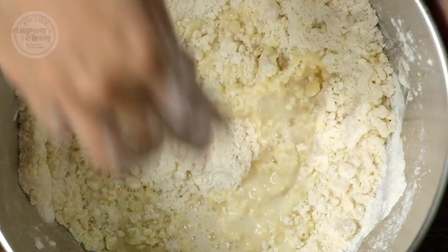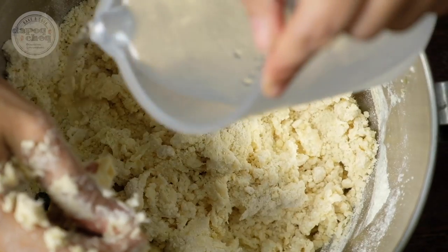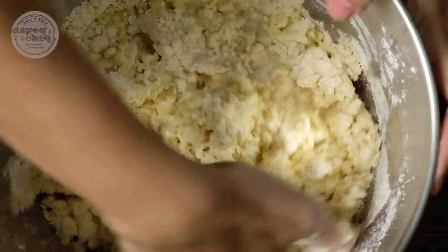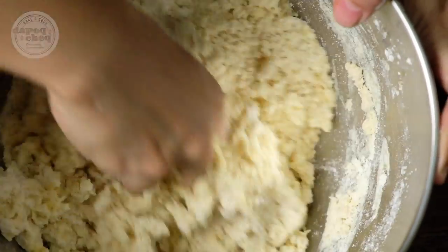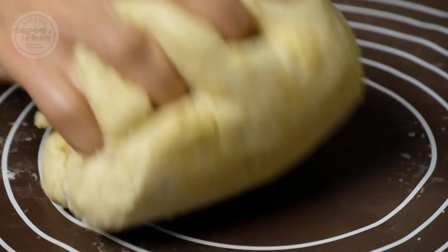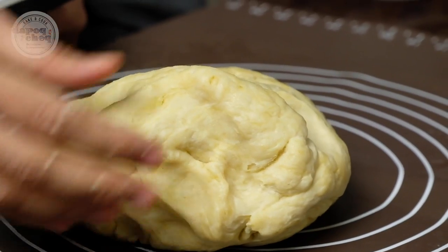Masuk sikit-sikit jangan masuk banyak sekali, sebab kita tak nak dough kita lembek. Kak T letak air sikit-sikit. Masuk air, lepas tu uli. Yang ni kalau nak uli pakai mixer pun boleh, yang stand mixer kan. Yang ni dough yang dah lembut ni, dia dah tak lekat ke tangan kan.